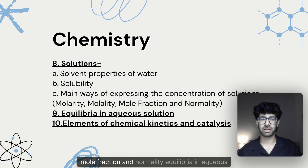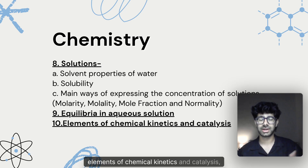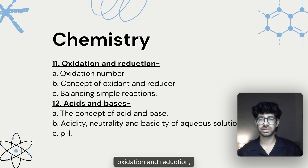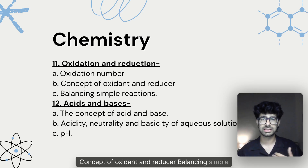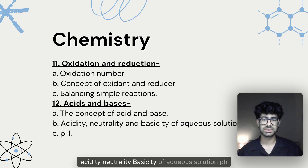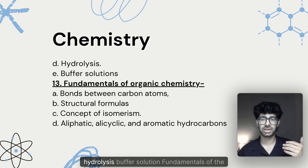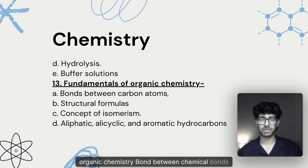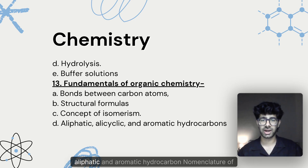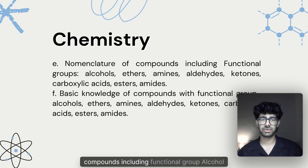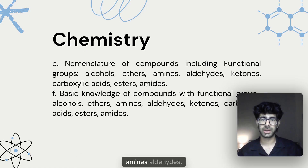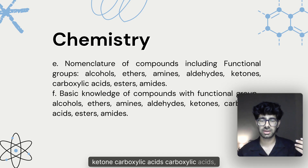Solutions covers solvent properties of water, solubility, and main ways of expressing the concentration of a solution — molarity, molality, mole fraction, and normality. Equilibria in aqueous solution covers equilibrium and elements of chemical kinetics and catalysis. Oxidation and reduction covers oxidation numbers, the concept of oxidant and reducer, and balancing simple reactions. Acids and bases covers the concept of acid and base, acidity, neutrality and basicity of aqueous solutions, pH, hydrolysis, and buffer solutions. Fundamentals of organic chemistry covers bonds between carbon atoms, structural formulas, isomerism, aliphatic and aromatic hydrocarbons, and nomenclature of compounds including functional groups — alcohols, ethers, amines, aldehydes, ketones, carboxylic acids, esters, and amides.